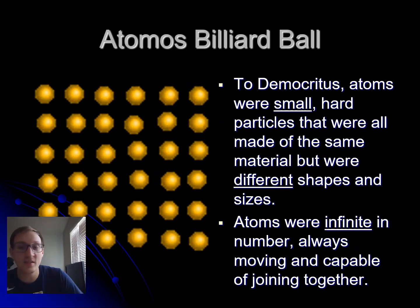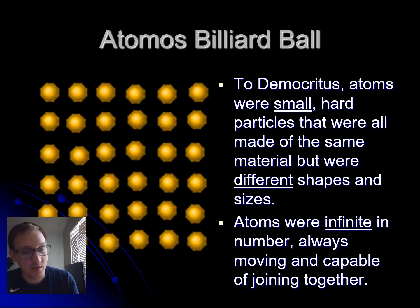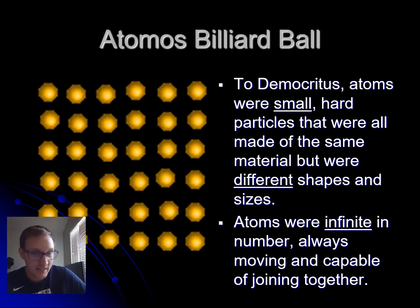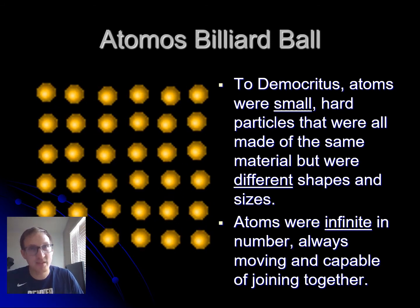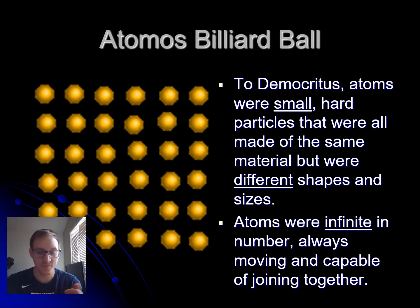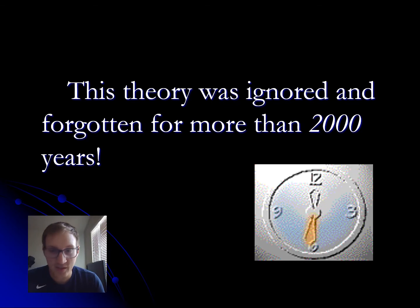To Democritus, atoms were small, hard particles made of the same material but in different shapes and sizes. Atoms were infinite in number and always moving and joining together. This is still referred to as the billiard ball model because he viewed them as little balls that collided or connected together. This theory was then largely ignored for about 2,000 years.